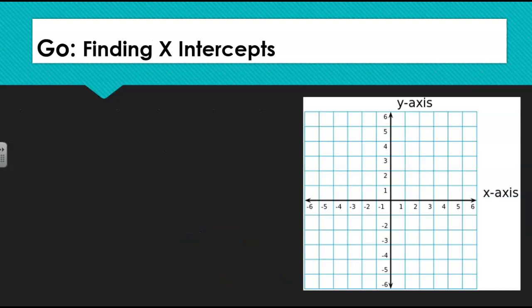In the Go section of our homework, we are finding the x-intercepts from a table, a graph, and an equation. If we look first at the graph, we know that our x-intercepts are where the function crosses the x-axis. We also know that the y-values for all x-intercepts are going to be zero, because those points are located on the x-axis, meaning we don't go anywhere vertically to reach them.